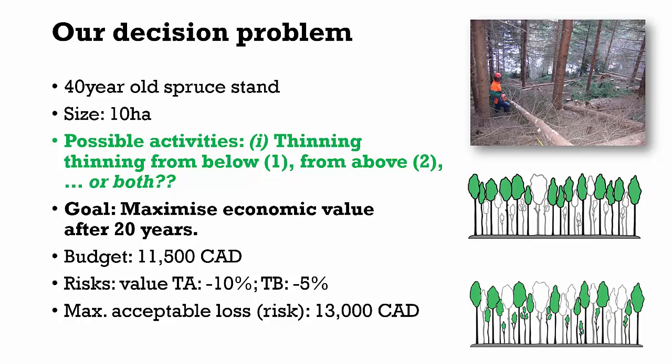The two thinning types are our activities. Our goal is to maximize total revenues that arise from summing up revenues from thinning this year as well as revenues from our final harvest in year 20. However, we only have a limited budget of 11,500 Canadian dollars available to carry out our activities this year. Additionally, depending on the activity type chosen, we anticipate damages to the stand until it reaches the year of final harvest, and in the case of thinning from above, we assume that damages will be higher than in the case of thinning from below.